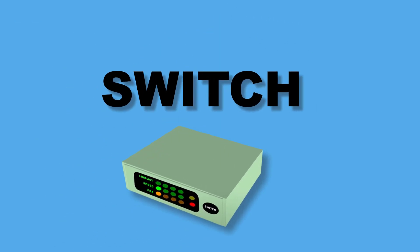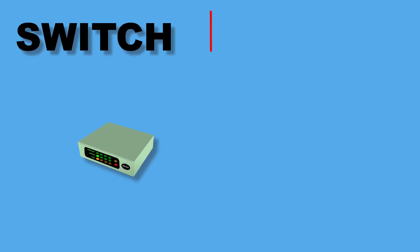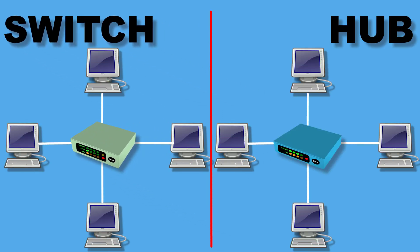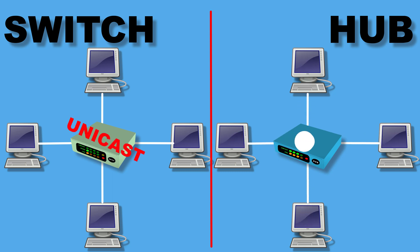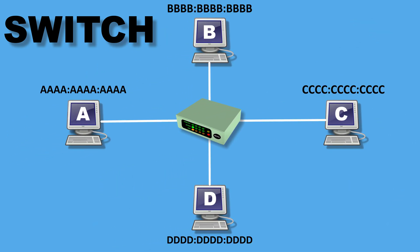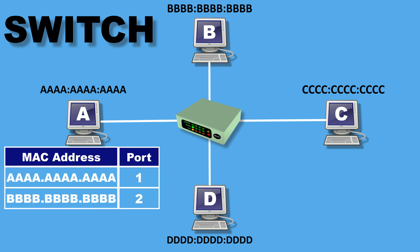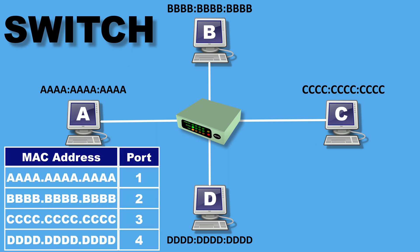Switch. Switches are key building blocks for any network. Like a hub, a switch also has many ports to accept Ethernet connections from network devices. But unlike a hub, switches are intelligent. The main difference is that a hub is a broadcast device which sends data from one PC to all, but a switch is a unicast device which can send data to a specific host or PC. A switch can learn the physical addresses of connected devices and store their MAC addresses in its MAC table.